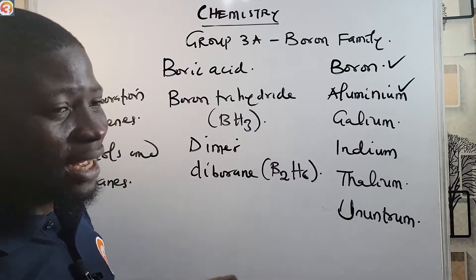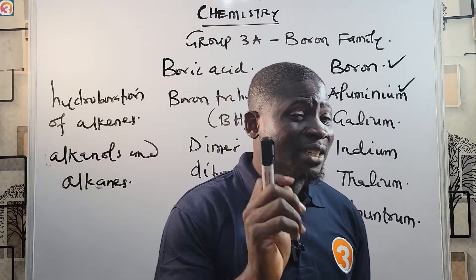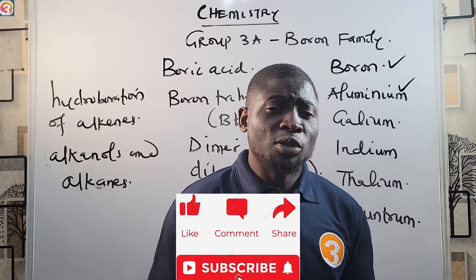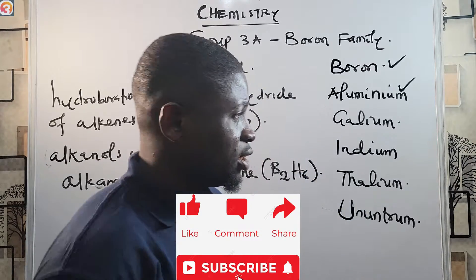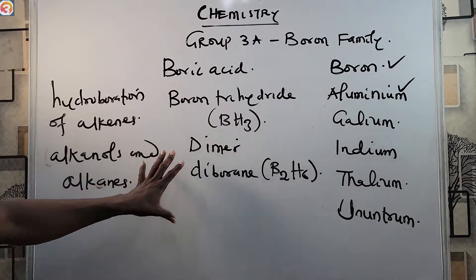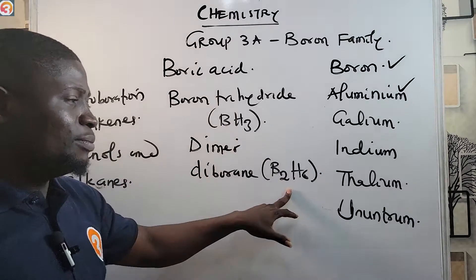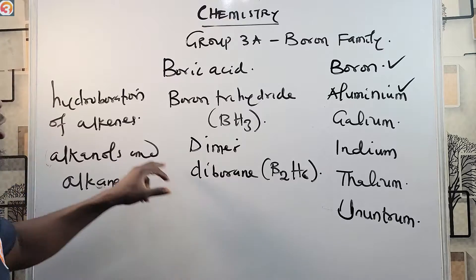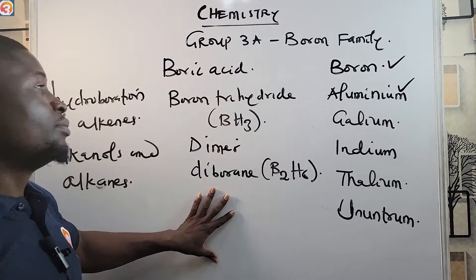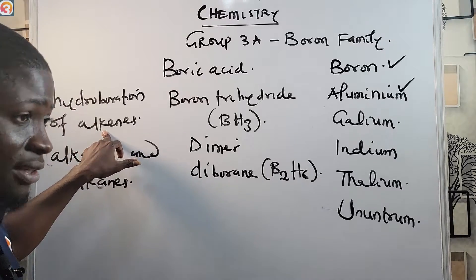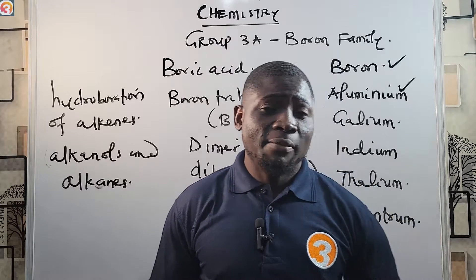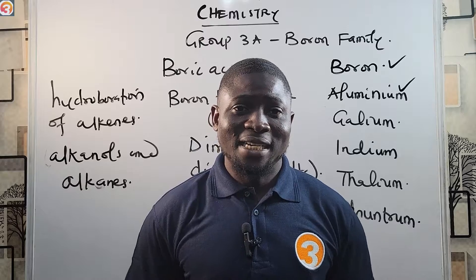Please follow this series episode by episode, and if you haven't liked this video, click the like button below. Subscribe — it's free, and it notifies you whenever a new video is released. Share with your friends, class group, and family. To recap: diborane (B₂H₆) is useful in the hydroboration of alkenes, converting them into alcohols and alkanes. That's all for Group 3A. In the next episode, we move to Group 4. Thanks for watching.